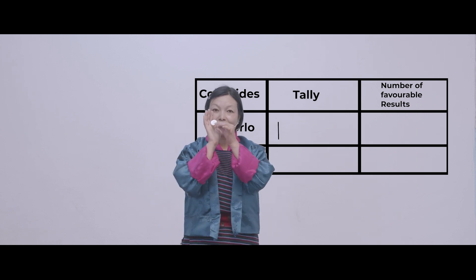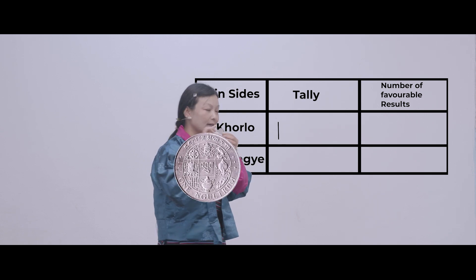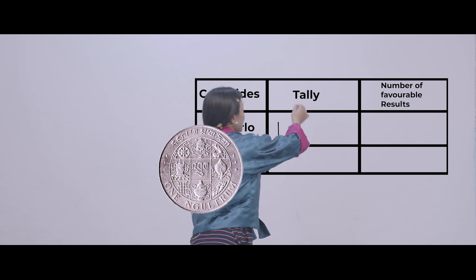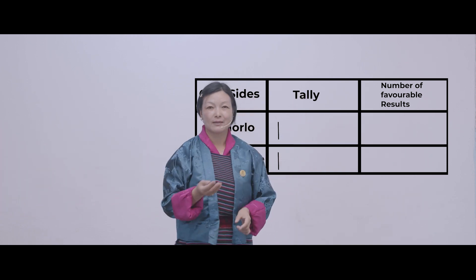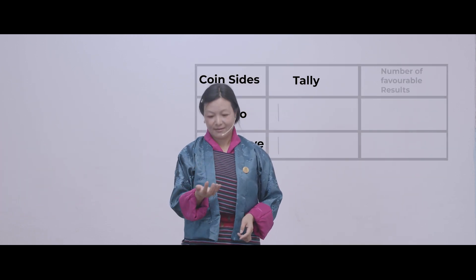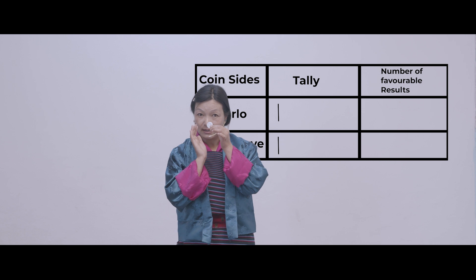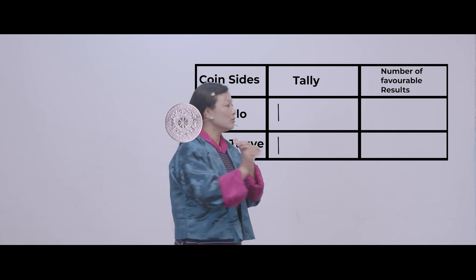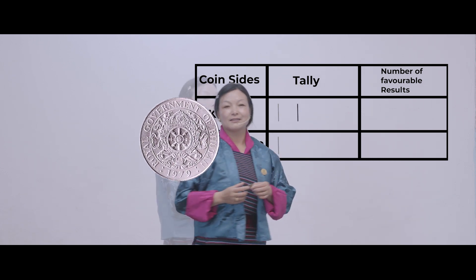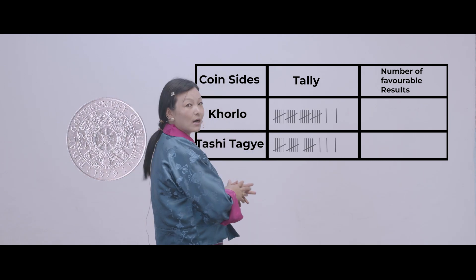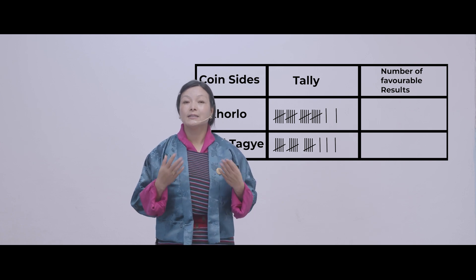Look here — it is tashy dhage. So I will mark in tashy dhage. Khorlo again. Now we have finished the trials.